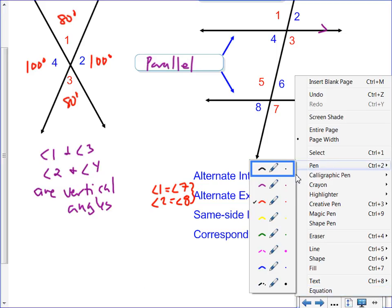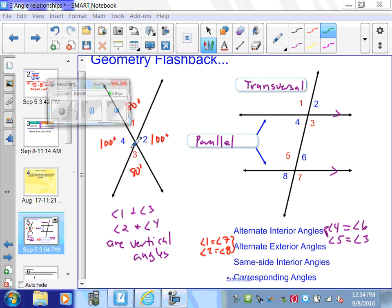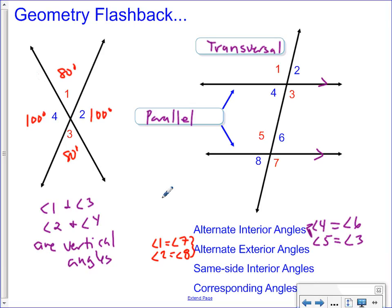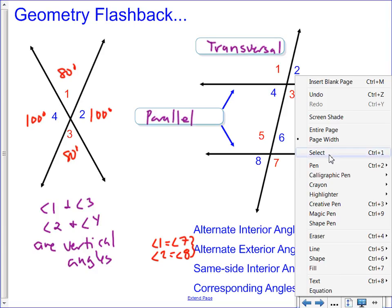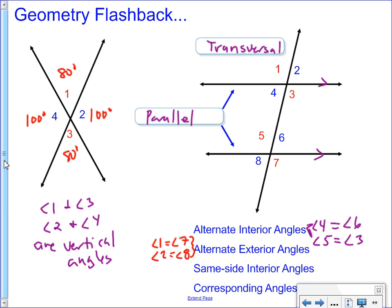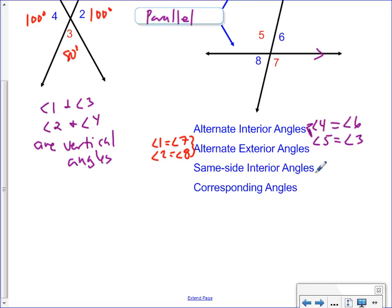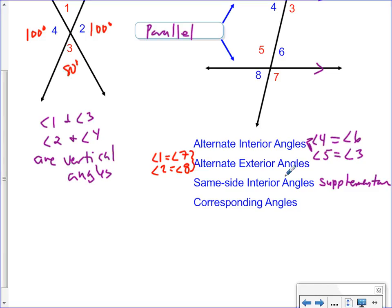Same side interior angles. Four and five. Very good. Notice four and five are different colors. What else do you remember from same side interior angles? Supplementary. Yeah. So they add up to 180. Same side interior angles are supplementary. Examples would be angle four and angle five would equal 180, and then angle three and angle six would be 180.